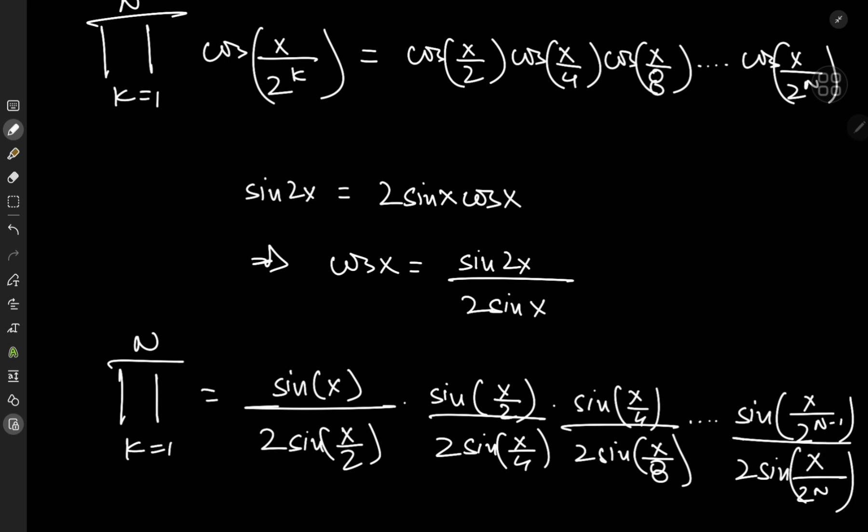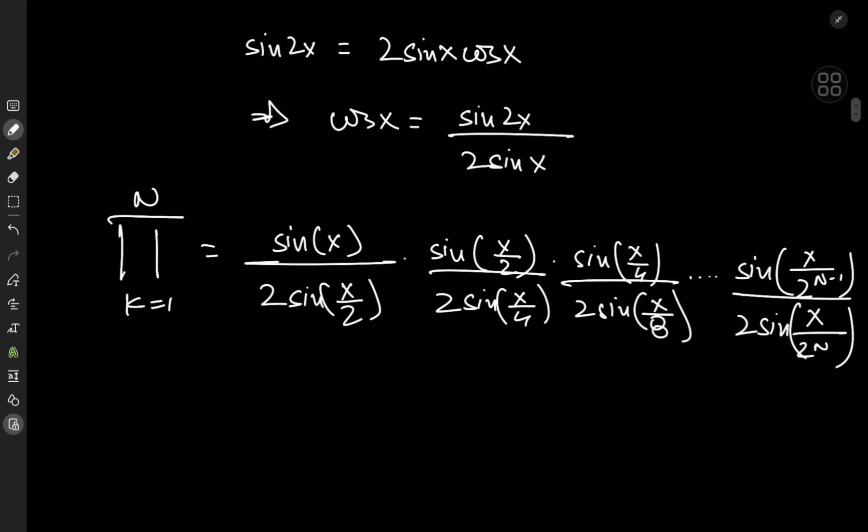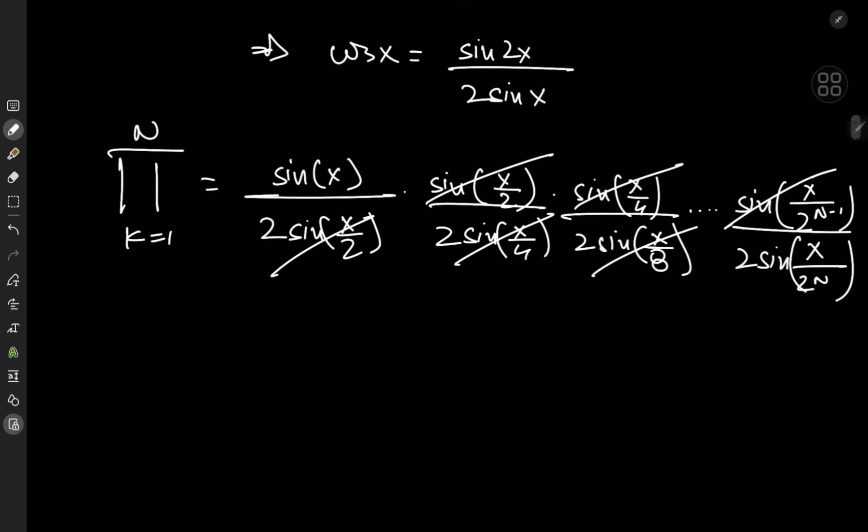So like I said, I could get the cancellations similar to the kind I would get for telescoping series, and indeed that is the case, because we have these wonderful cancellations taking place, and they continue all the way up to this thing here, with only the first and the last term surviving. So the product from k equals 1 to n of cosine of x by 2 to the k equals the sine of x divided by 2 to the n times the sine of x by 2 to the n.